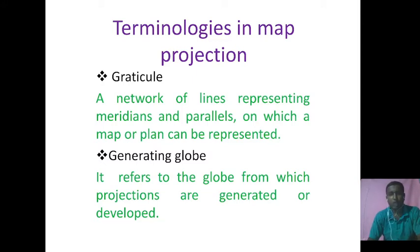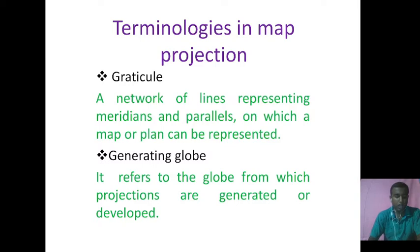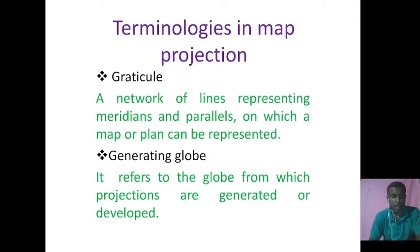Now I am talking about the terminologies of map projection. First of all, I would like to talk about Graticule. It refers to the net or mesh of mutually intersecting parallels and meridians drawn to a certain scale and based on certain principles. The term Graticule is used to specify the procedures by which the network of graticules are drawn.